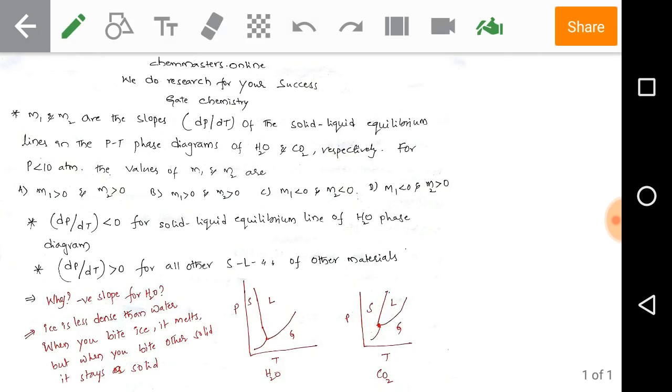Now why the negative slope for water when we compare with other solids? In water we have three phases: water, vapor, and ice. For ice, the solid-liquid equilibrium line is going to be negative when we increase the pressure. But for other solids it is in the positive side.